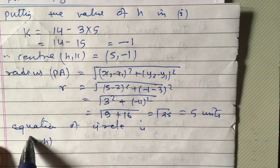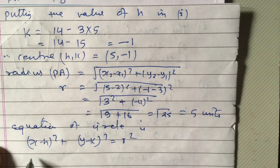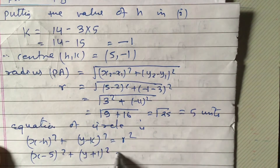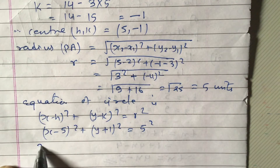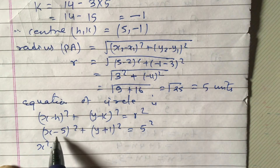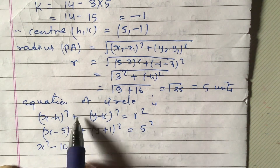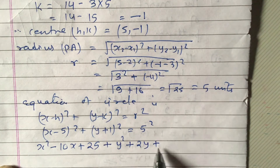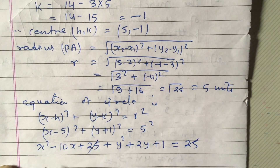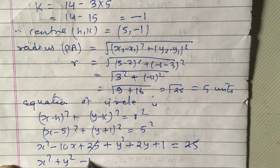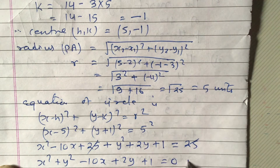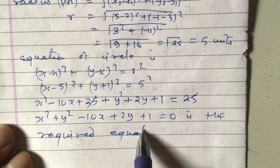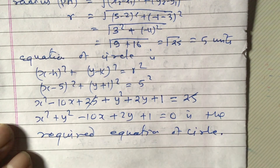Now we write the equation of the circle: (x - h)² + (y - k)² = r². Substituting center (5, -1) and r = 5: (x-5)² + (y+1)² = 25. Expanding: x² - 10x + 25 + y² + 2y + 1 = 25. Simplifying: x² + y² - 10x + 2y + 1 = 0 is the required equation of the circle. Thank you for watching this video.